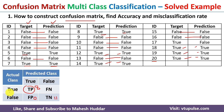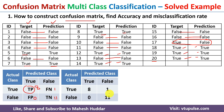Coming back to false negative: the actual class should be true and the predicted class should be false. Going through the data, we find only one example where the actual class is true and the predicted class is false. So false negative equals 1. This is how the confusion matrix looks: TP=8, TN=11, FP=0, FN=1.